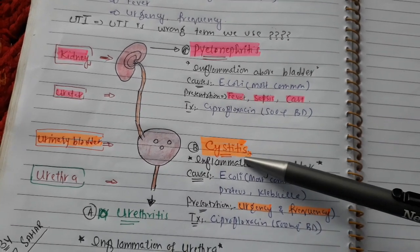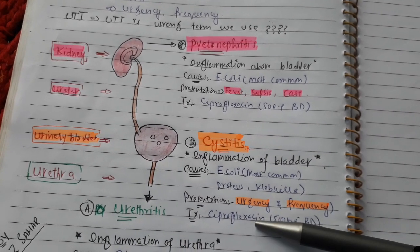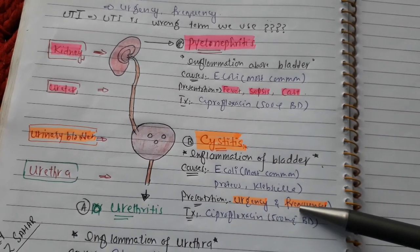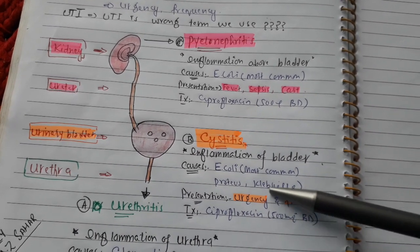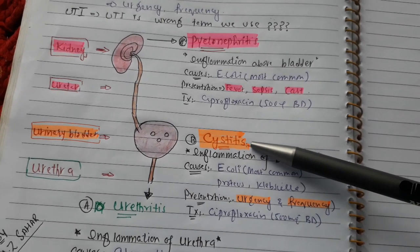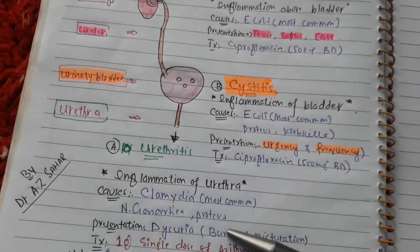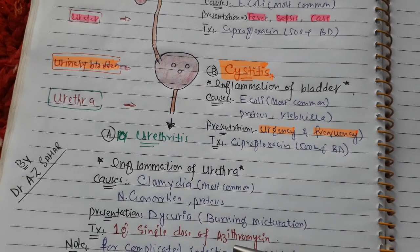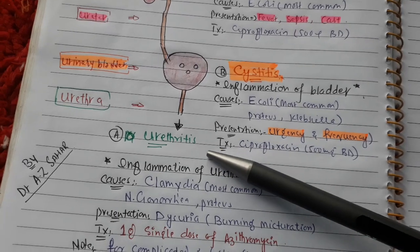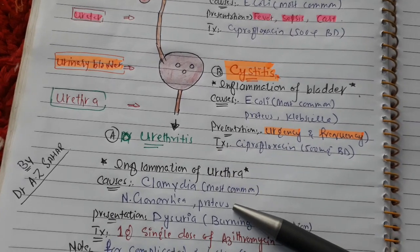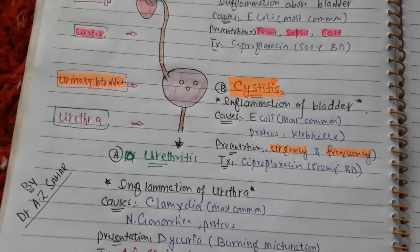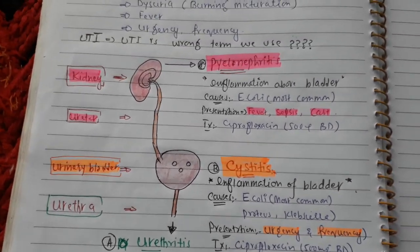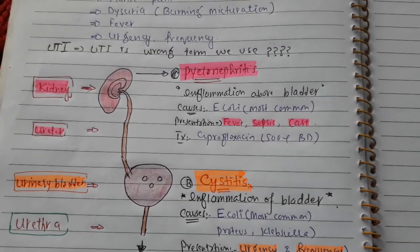To summarize: if the patient presents only with frequency and urgency, we cannot call it UTI — we call it cystitis. If the patient presents only with dysuria and burning micturition, that is what we call urethritis. So we need to use these specific terms rather than the general term UTI.